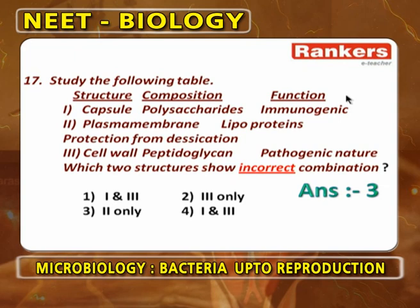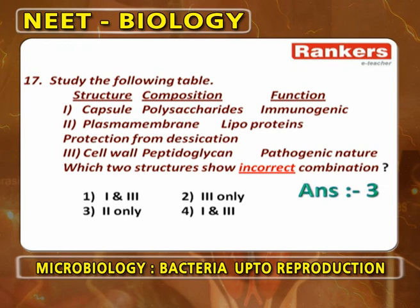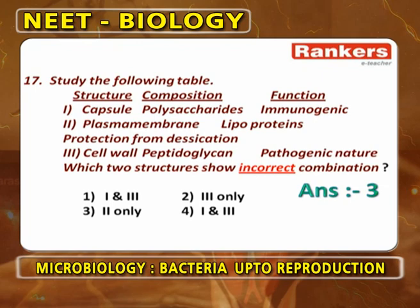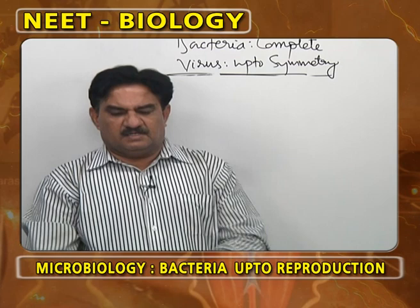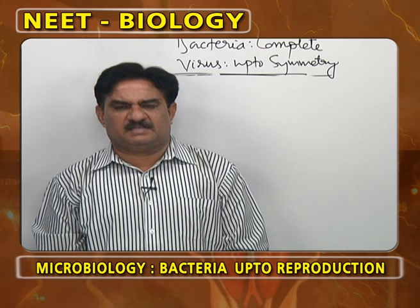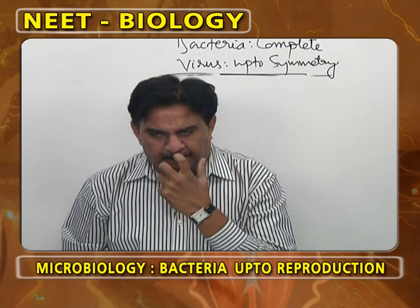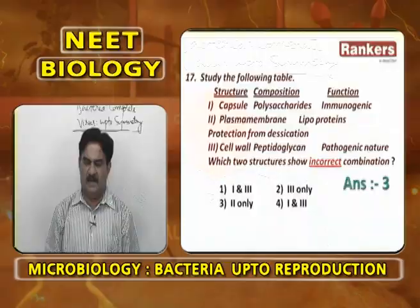Study the following table — identify the incorrect one: Capsule made of polysaccharides, function immunogenic — correct. Plasma membrane made of lipoproteins, function protection from desiccation — wrong; the plasma membrane is not involved with desiccation. Cell wall peptidoglycan gives pathogenic nature — correct. So statement 2 (plasma membrane/desiccation) is incorrect — answer is 2.